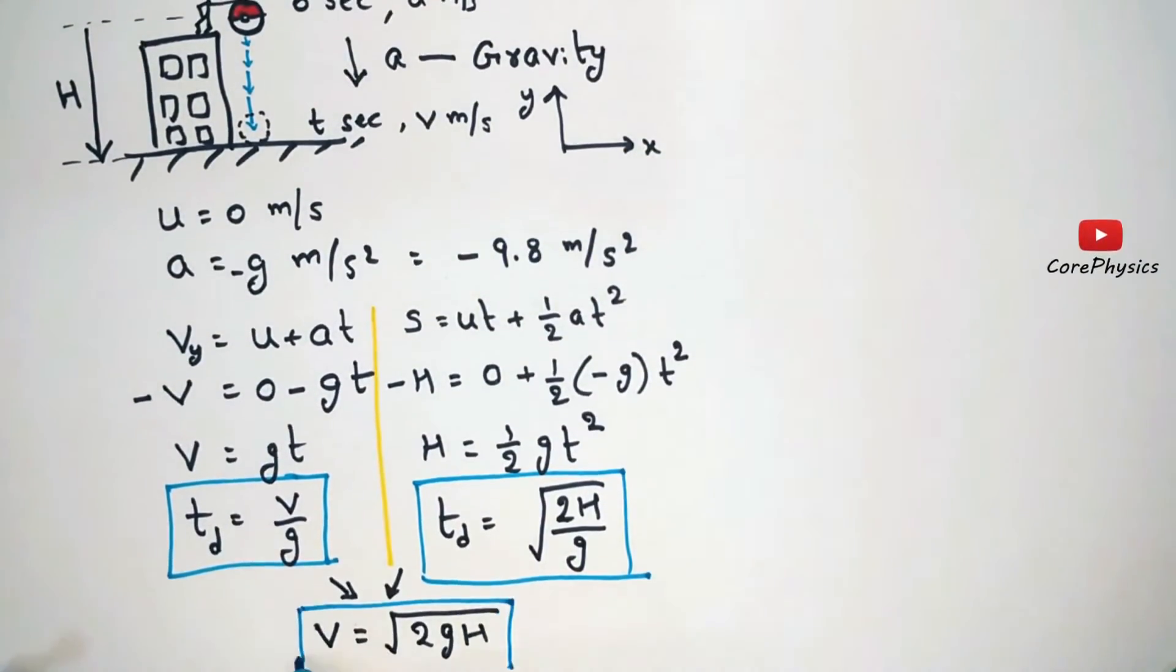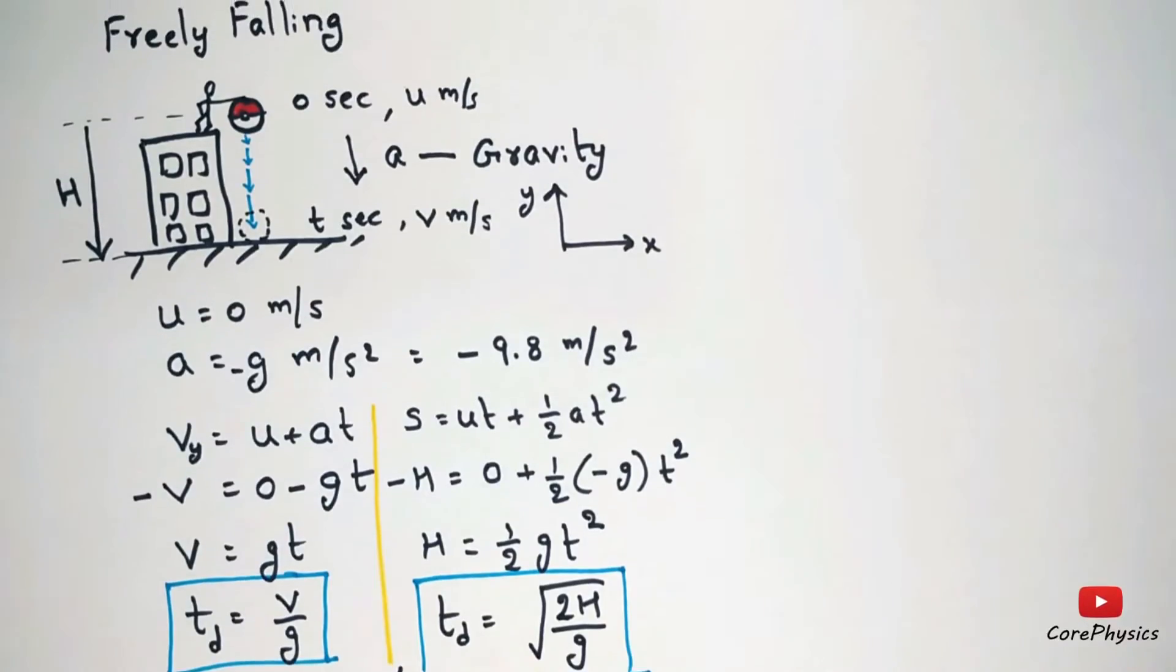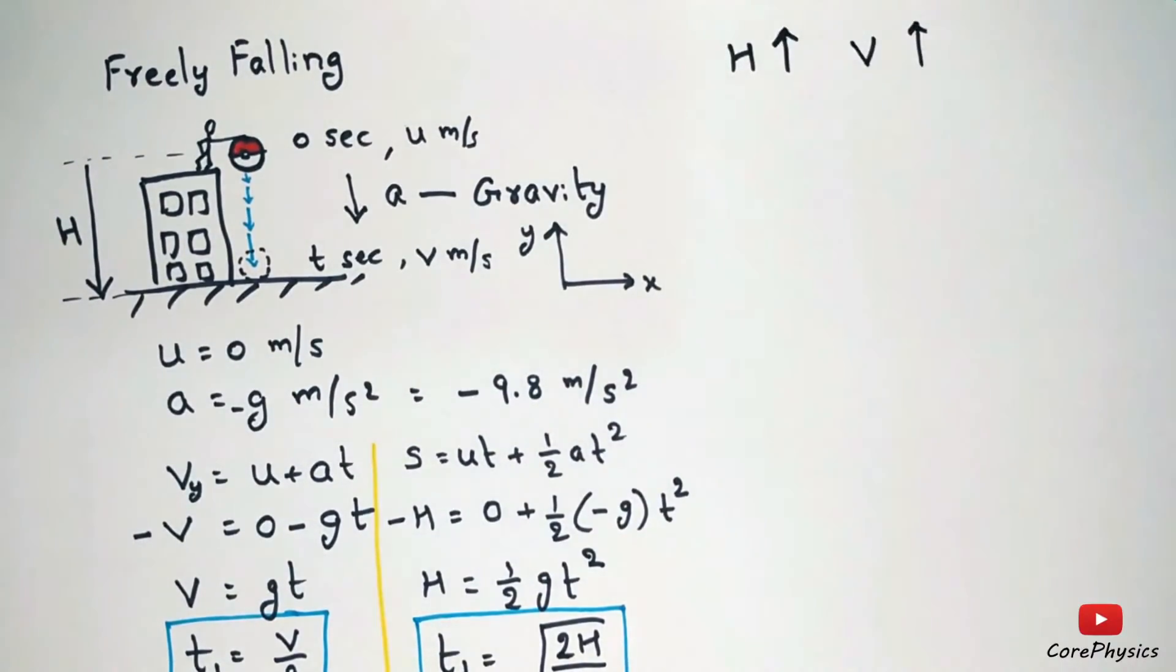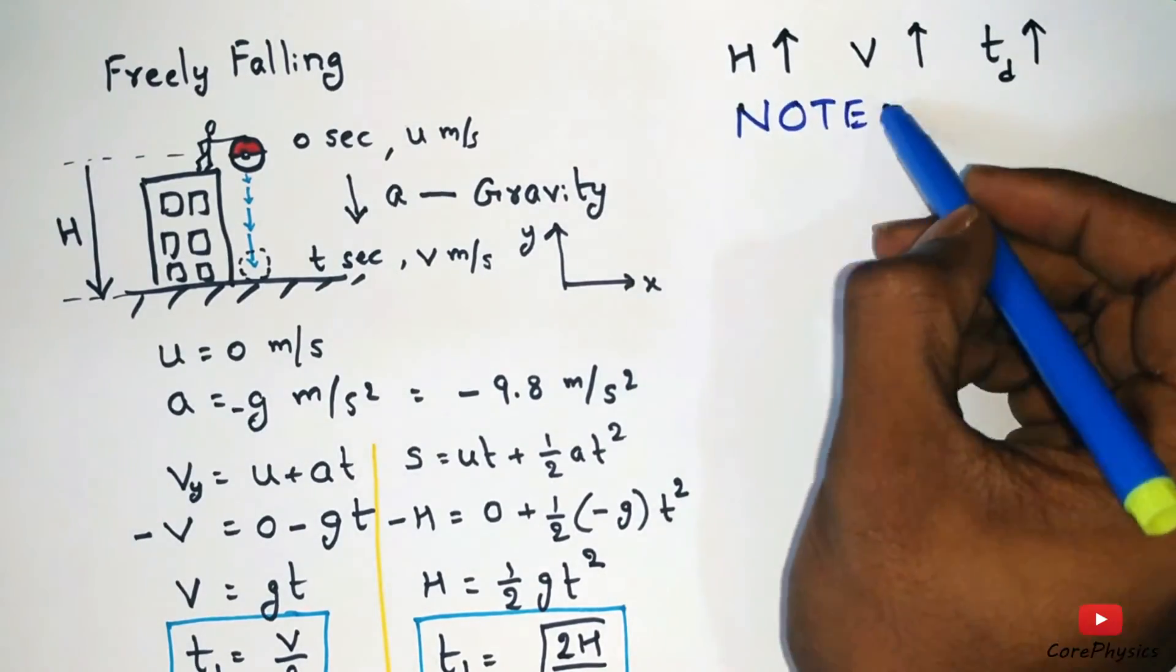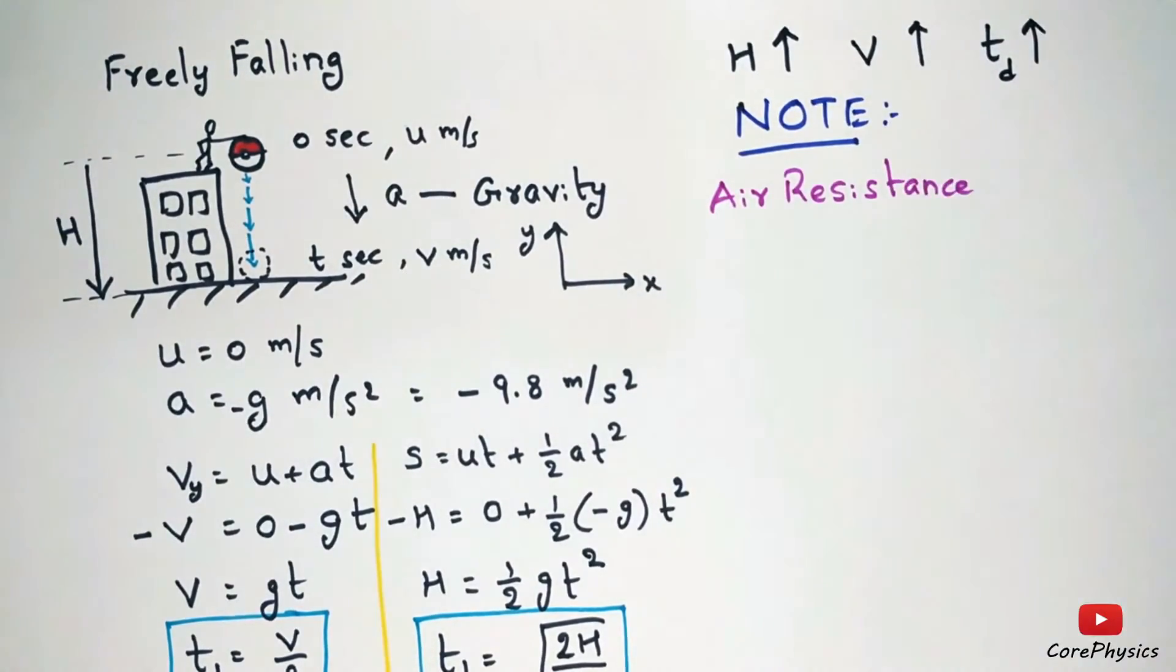So we can say that as the height of the building increases the velocity of impact will increase and the time of descent will also increase with the height of the building. Please note that these equations are derived without considering air resistance.